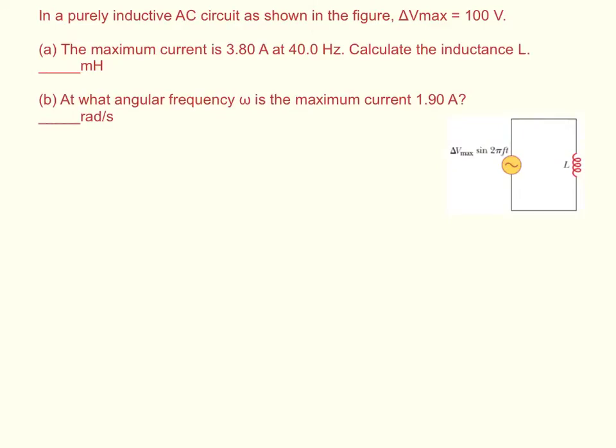In a purely AC circuit, as shown in the figure, delta V max is 100 volts. The maximum current is 3.8 amps at 40 hertz. Calculate the inductance in millihenries. At what angular frequency omega is the maximum current 1.9 amps, and it wants it in radians per second.